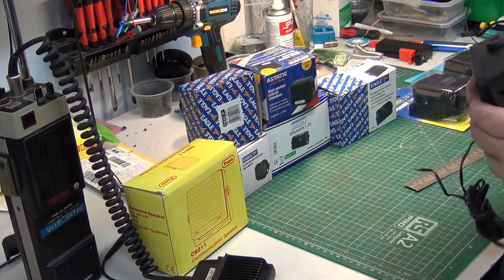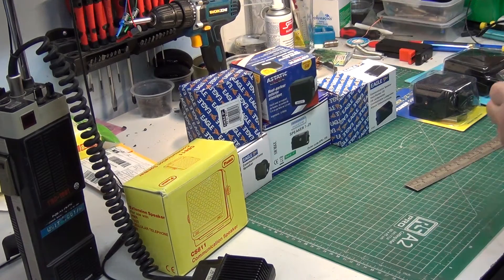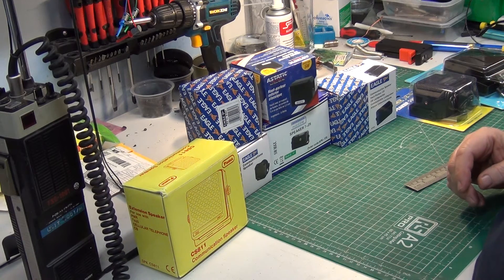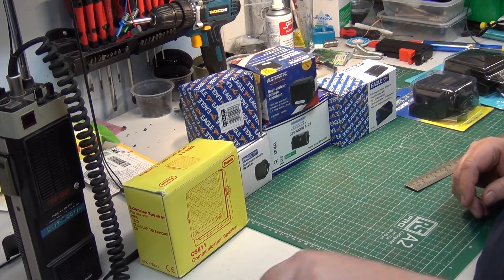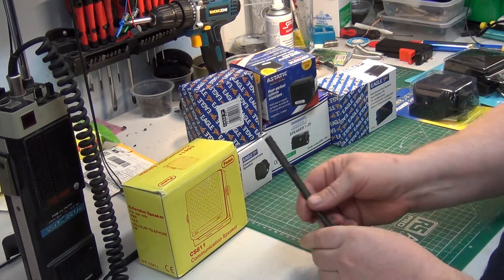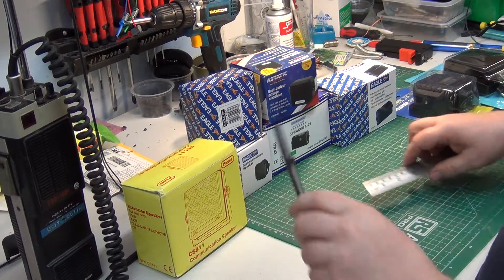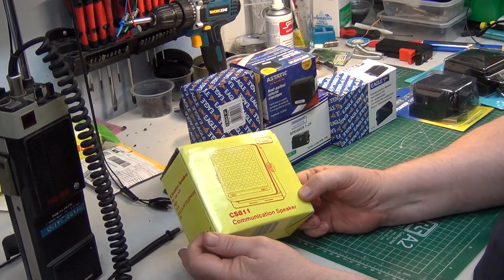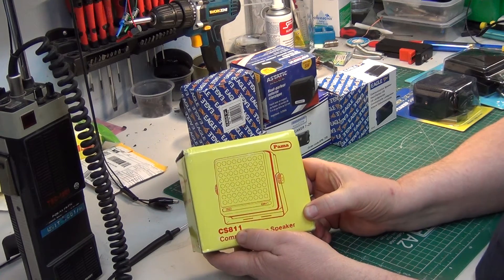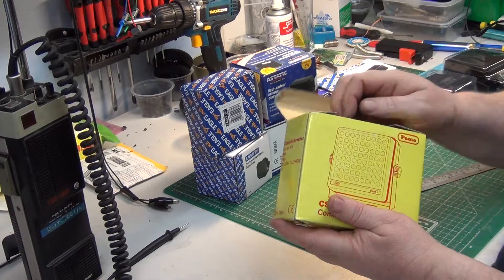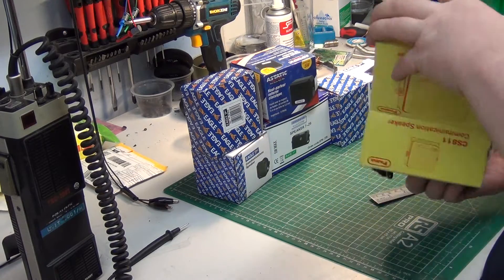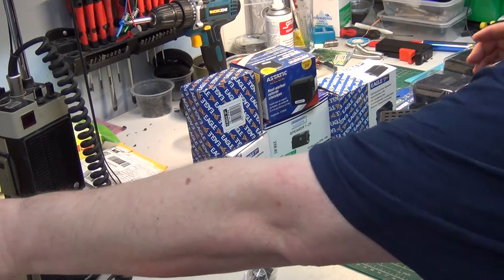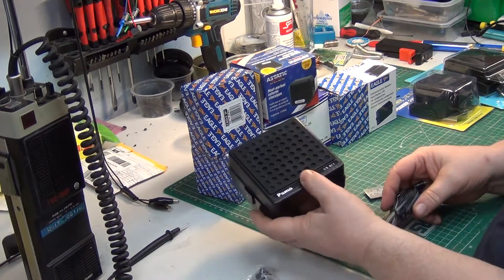But they still do pop up, and I do buy them because I like them. People want to use extension speakers sometimes in a base station situation when they're using a mobile radio with a power supply rather than a dedicated base station. So I bought this new old stock, I think it was £10 plus postage, and this is the Palmer version, the CS811, of the Shaman's SW711. We're going to use this as our benchmark speaker.